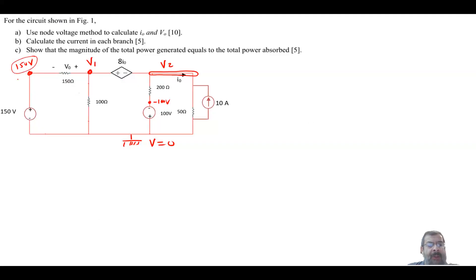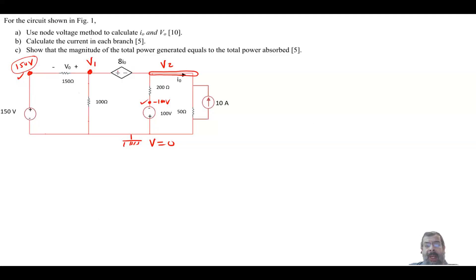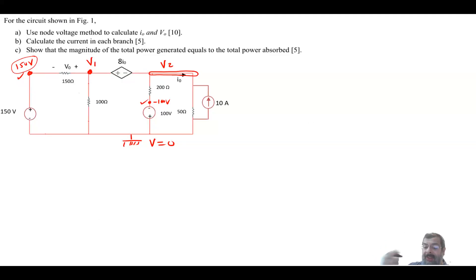The nodes with known voltages (150V, -100V, and the reference) don't need to be touched. We're left with V1 and V2. Both V1 and V2 are attached to a current-dependent voltage source, so we cannot apply KCL directly to V1 or V2 — we don't know the current in between, and assuming it would complicate the problem. Instead, we use the super node concept.